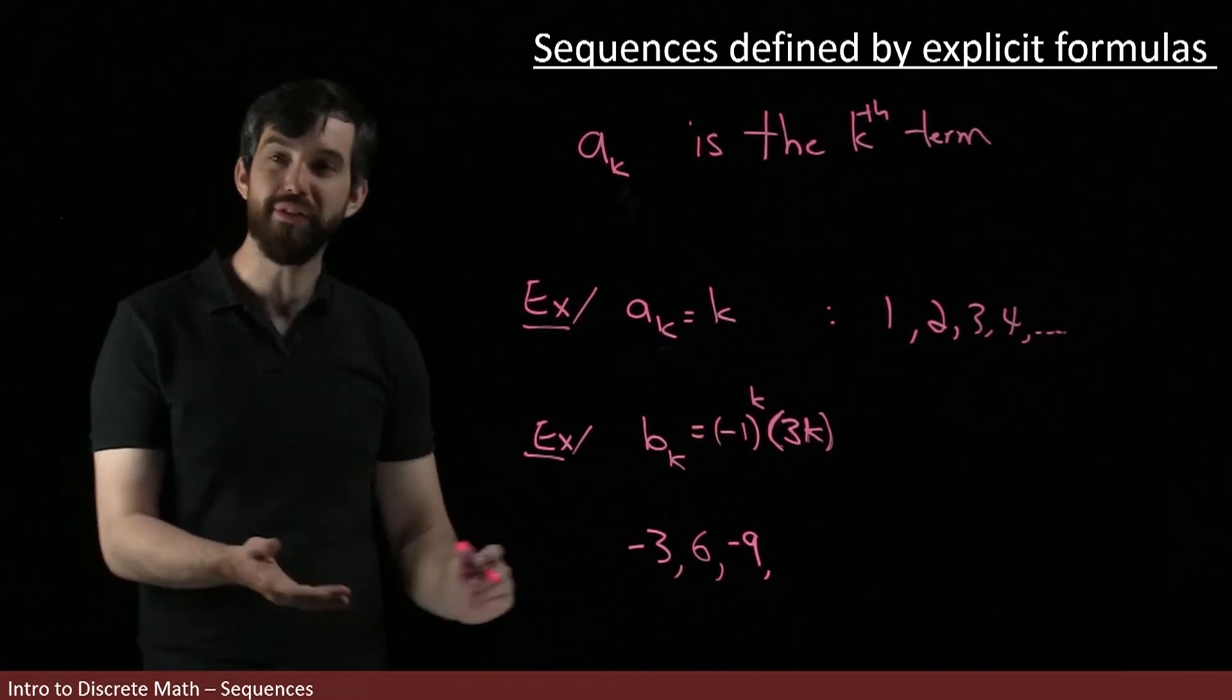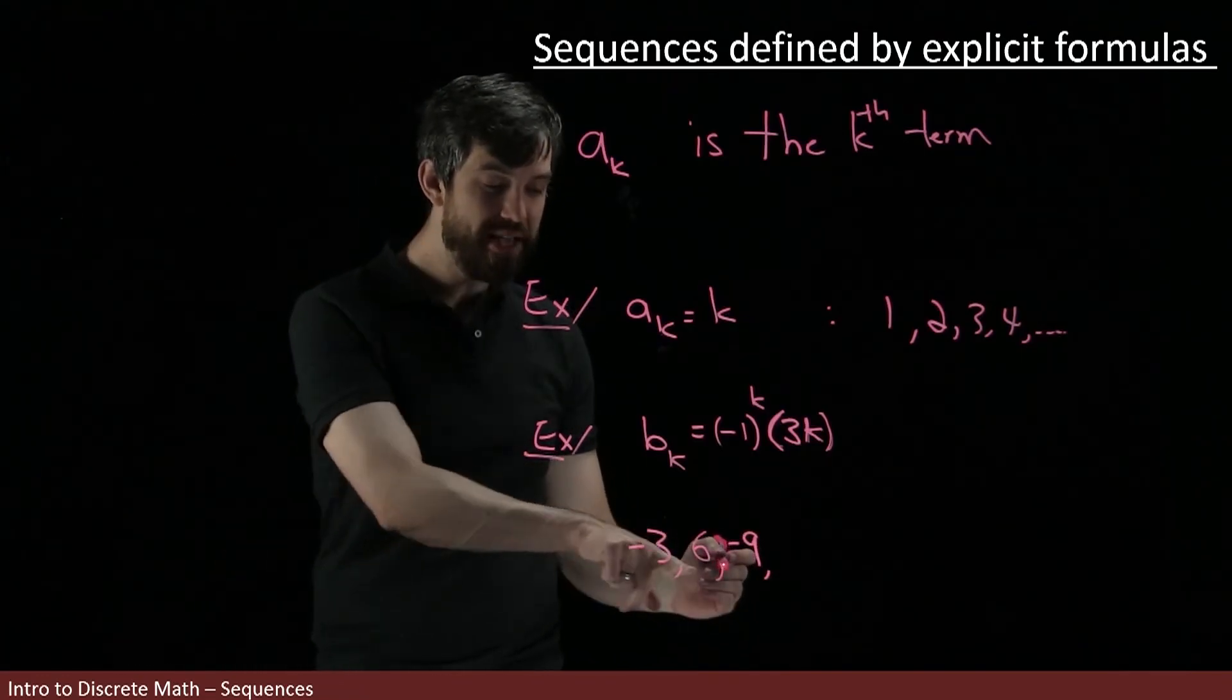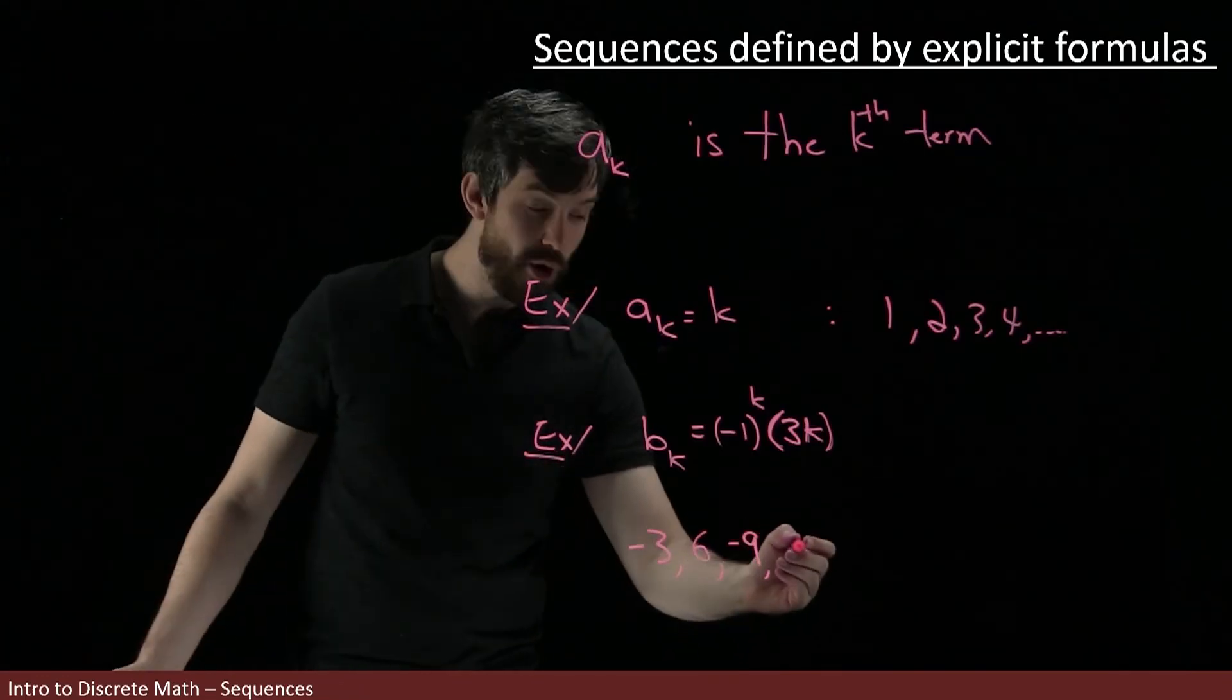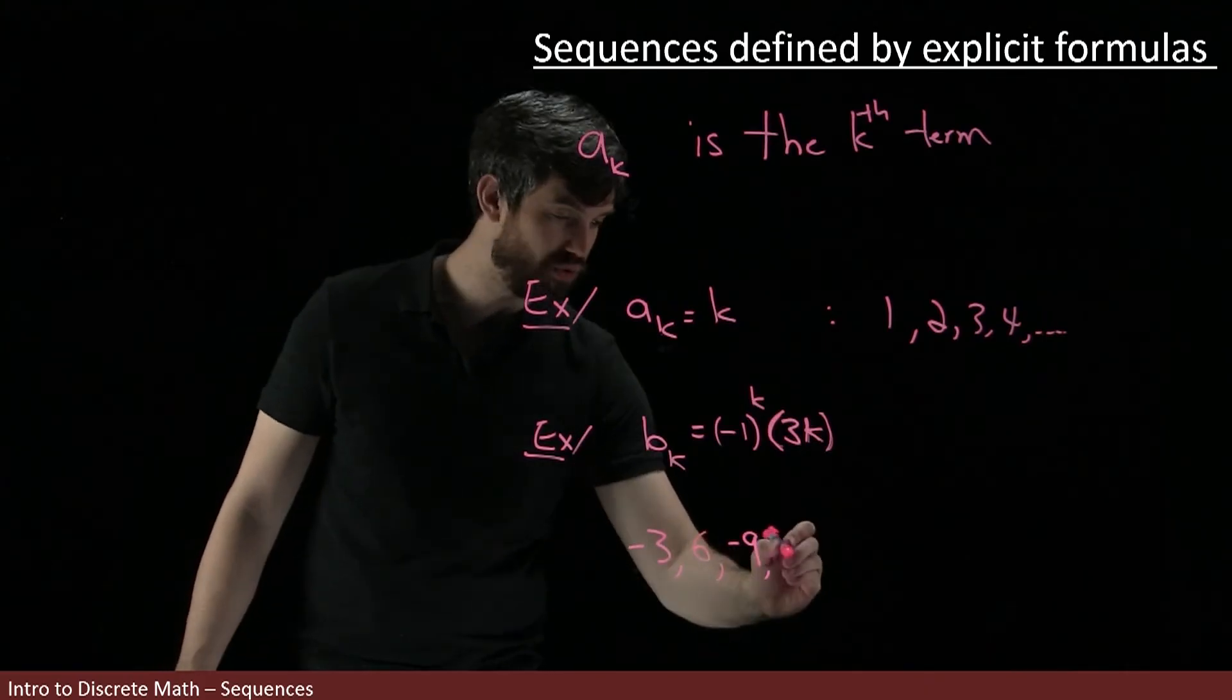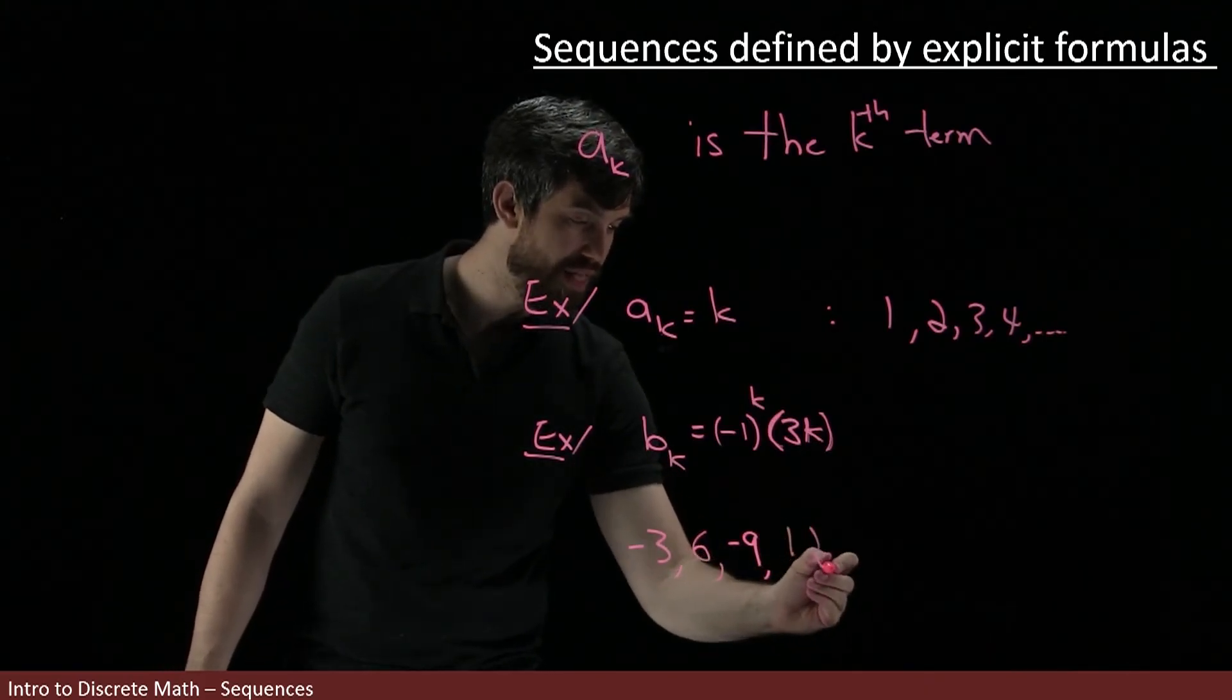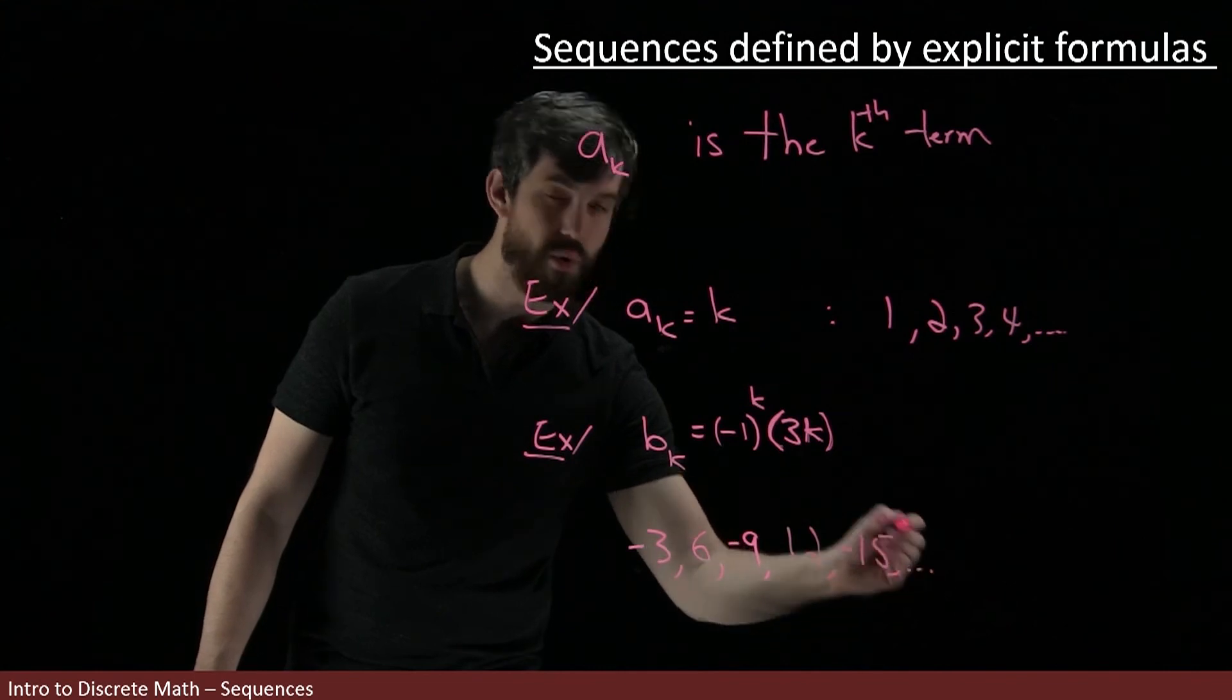So without even looking at it, I can look at the next one, and we're going to go minus, no minus, minus, it's going to have no minus in the next one, and it's going to be four times three, so 12. And then the next one would be minus 15, and so on.